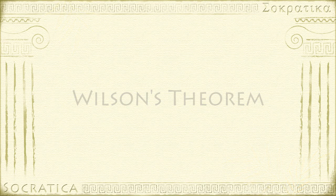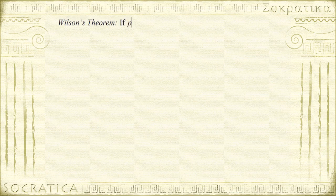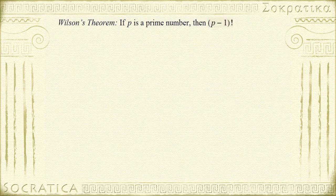We're going to talk about Wilson's Theorem. Wilson's Theorem says that if p is a prime number, then p minus 1 factorial is congruent to negative 1 mod p.